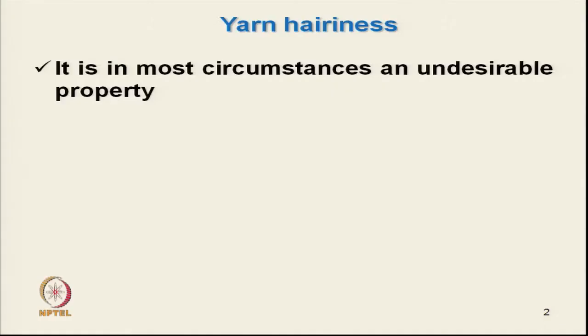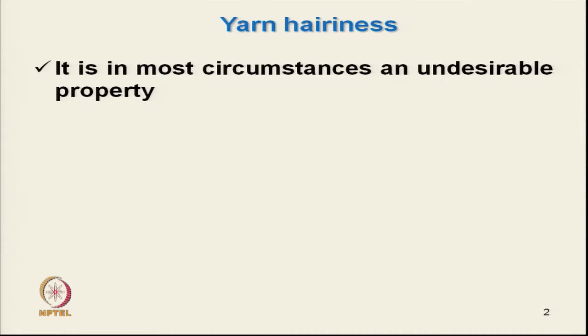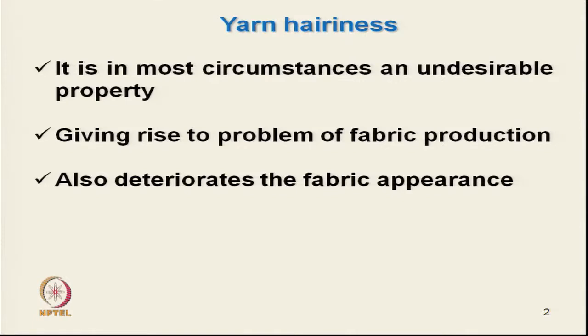In most circumstances, hairiness is an undesirable property — we need yarn that is free of hairs. If hairs are present, there are techniques to eliminate them like singeing and shearing. Compact spun yarn has been developed where hairs are almost absent. The problem is not only the visual appearance, but hairiness gives problems in fabric production and deteriorates fabric appearance due to those protruding hairs, making the fabric look dull.